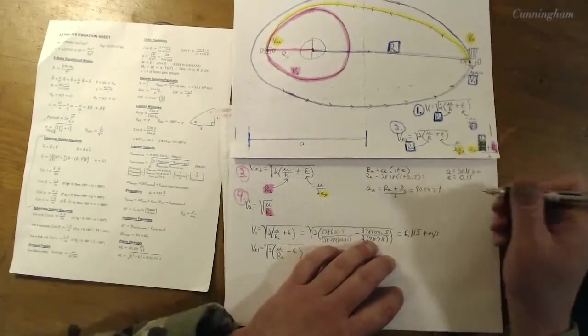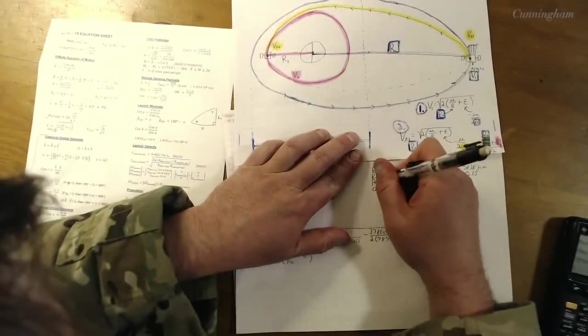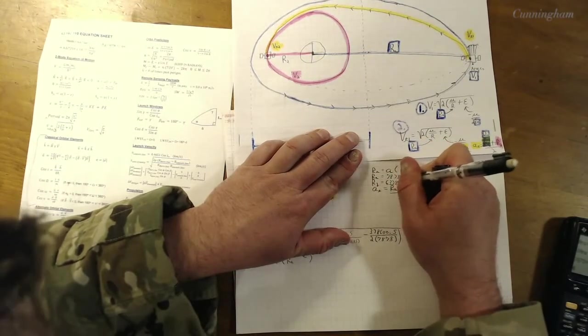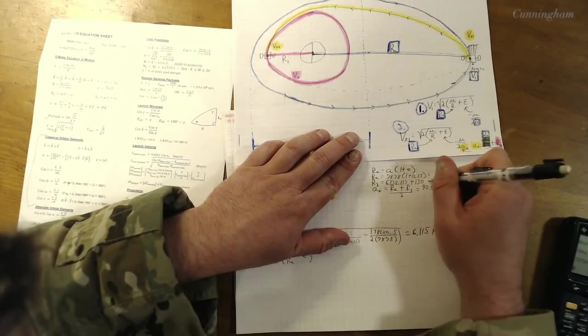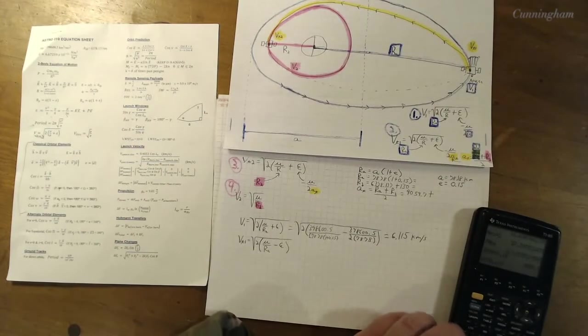All right, let's plug and chug. It's 6.115, of course that's kilometers per second. Great. Okay, next things next, v sub t1.